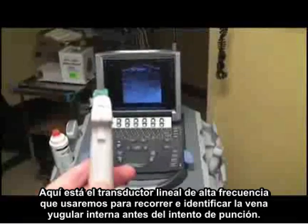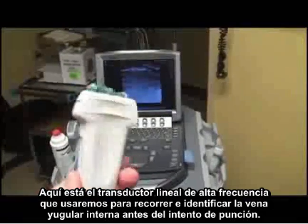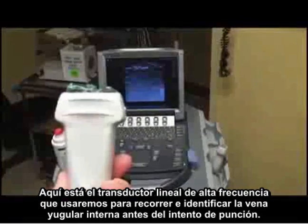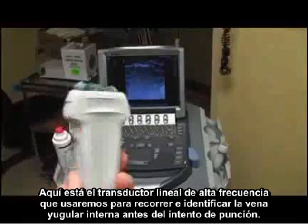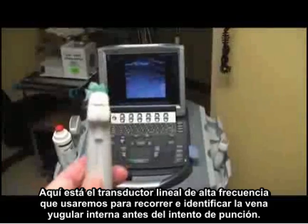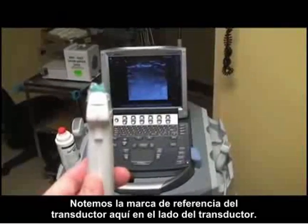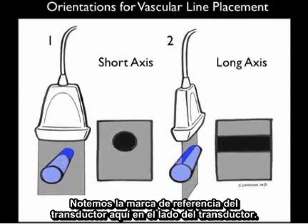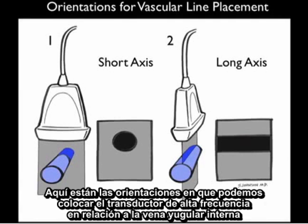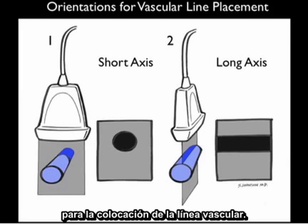Here's the high frequency linear array probe that we'll be using to best map out the internal jugular vein before puncture attempts. Notice the probe marker to the side of the probe. Here are the orientations that we can place the high frequency probe in relation to the internal jugular vein for vascular line placement.